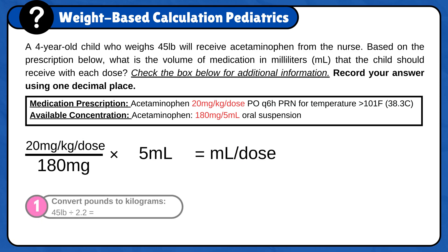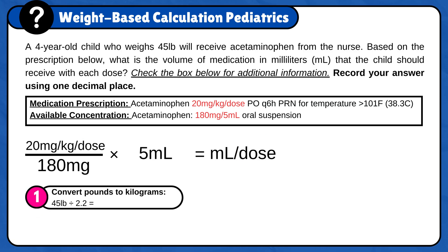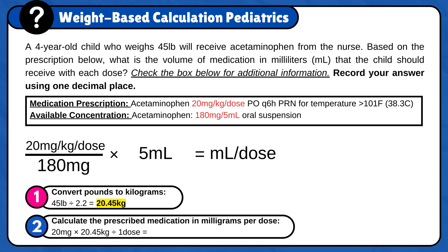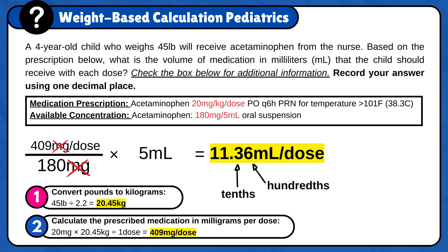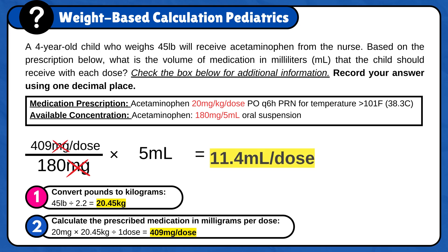First, convert pounds to kilograms: 45 pounds divided by 2.2 is 20.45 kilograms. Now, calculate the prescribed medication in milligrams per 1 dose: 20 milligrams times 20.45 kilograms divided by 1 dose is 409 milligrams per dose. Finally, plug the answer in the formula: 409 milligrams per dose divided by 180 milligrams times 5 milliliters. Milligram cancels out and the answer is 11.36 milliliters per dose. Round to one decimal place — since the hundredth digit is between 5 and 9, round up. The final answer is 11.4 milliliters per dose.